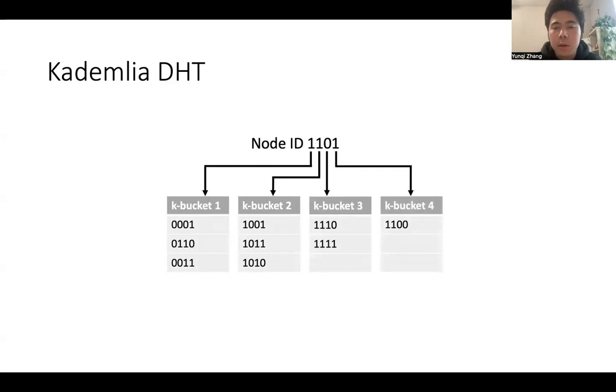A Kademlia node has a routing table, and the routing table is divided into sub-routing tables called K-buckets. And each K-bucket is responsible for a range of node IDs. For example, here, in bucket 1, we store peers with node ID starting from 0. Here, we have examples of 0001, 0110, and 0011.